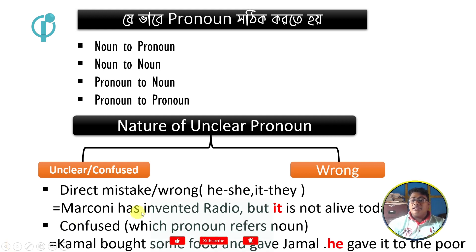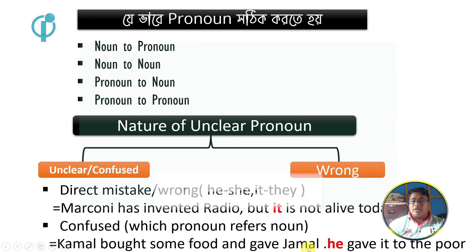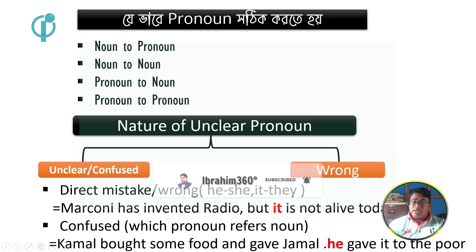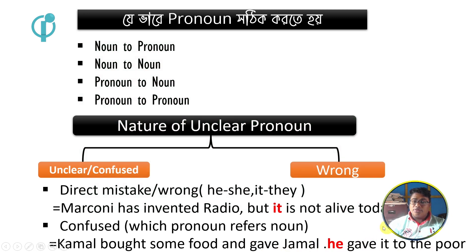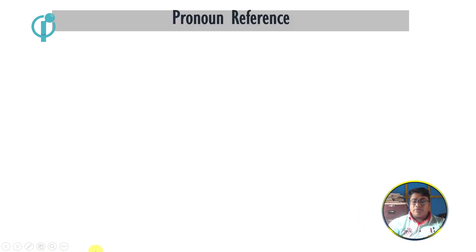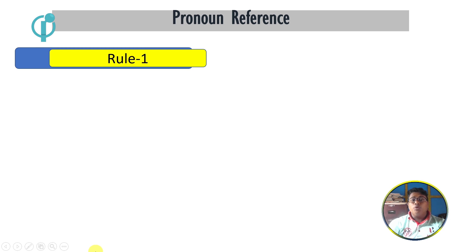He gave it to the world. So Jamal can tell Jamal. We have read the same word, and we have read this word as well — so it is actually confusing.